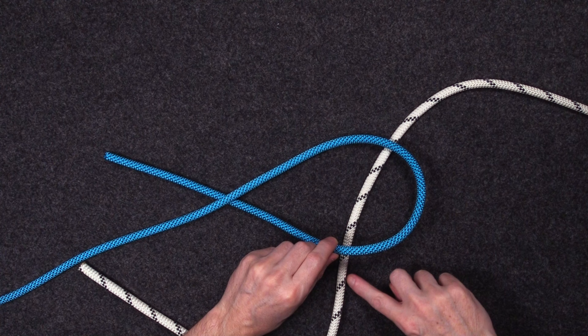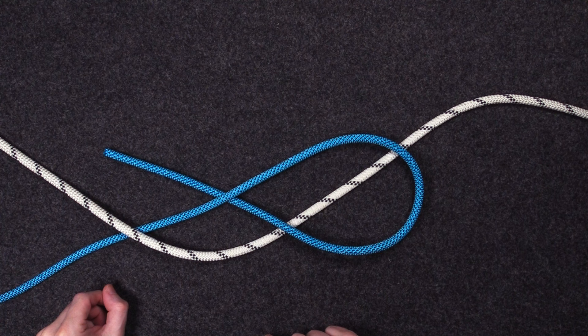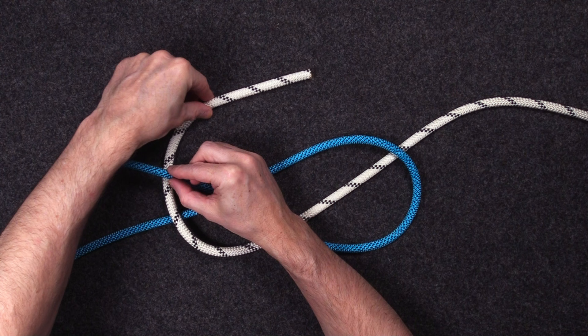Then take the working end of the white rope and we pass it over the standing part of the blue rope. We're then going to pass that working end of the white rope under the working part of the blue rope.